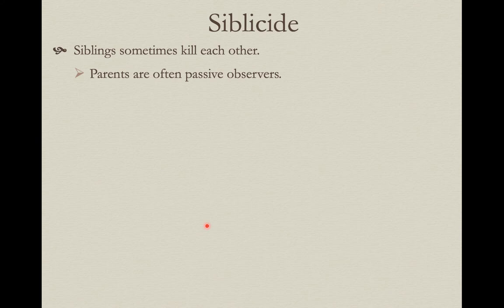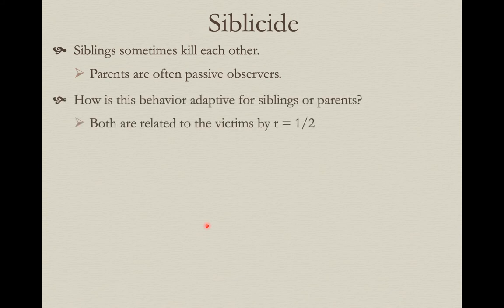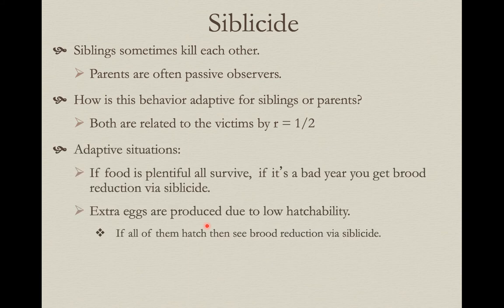Siblings sometimes kill each other — and in many bird species where this occurs, the parents are pretty much just passive observers, letting them duke it out. How could this be adaptive? Both the killer and the victim are related to each other by 50%. There are two situations in which sibilicide could be adaptive and natural selection could lead to it being an adaptation.